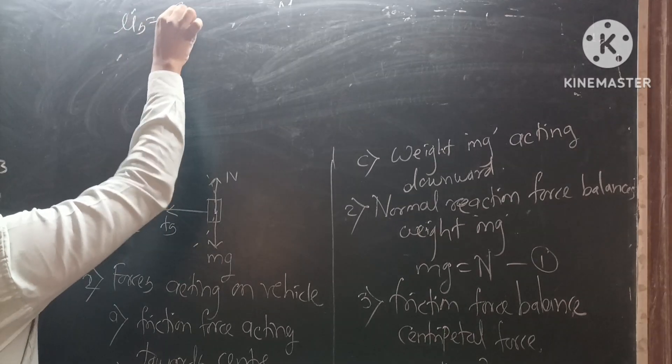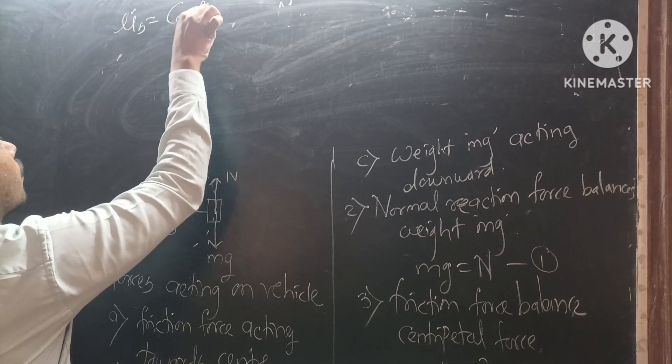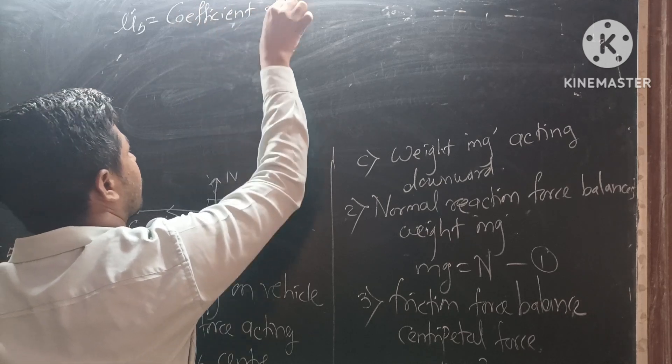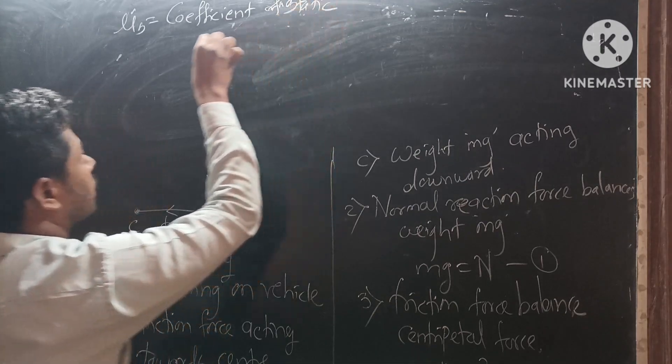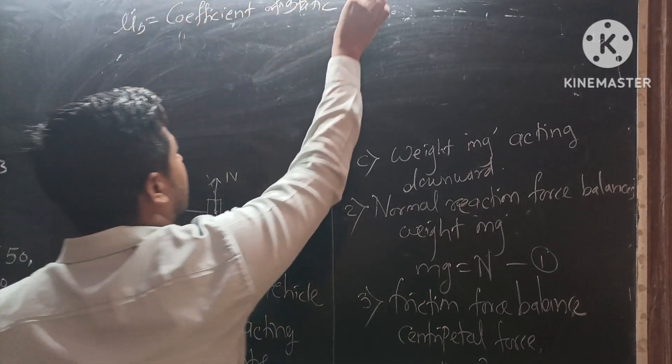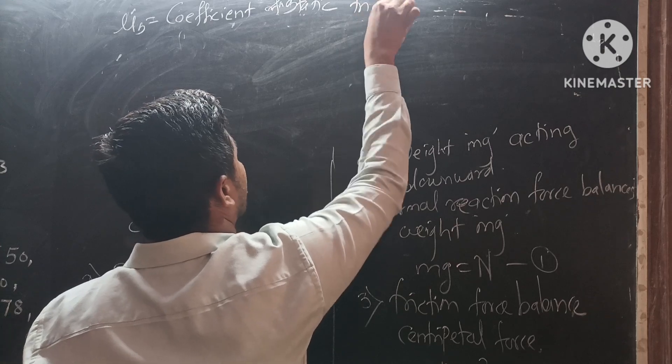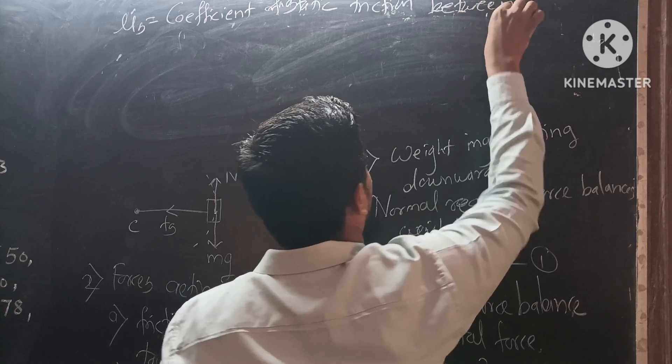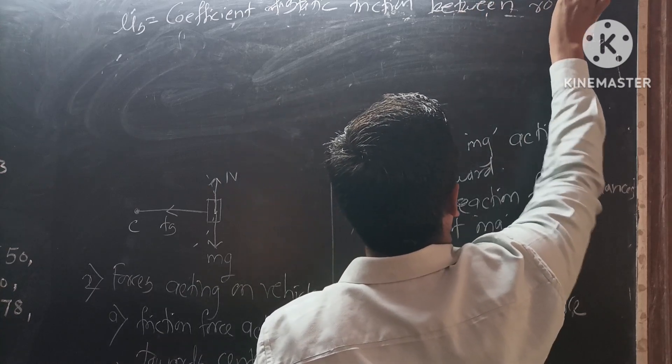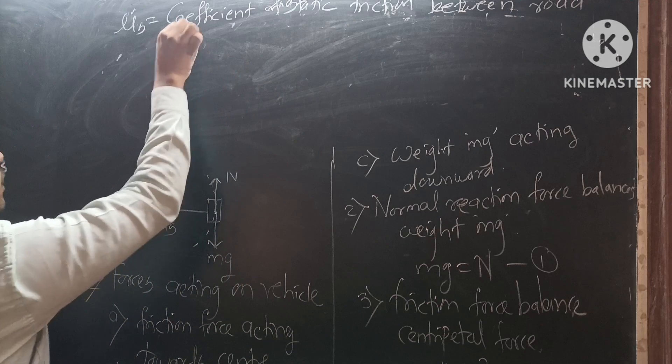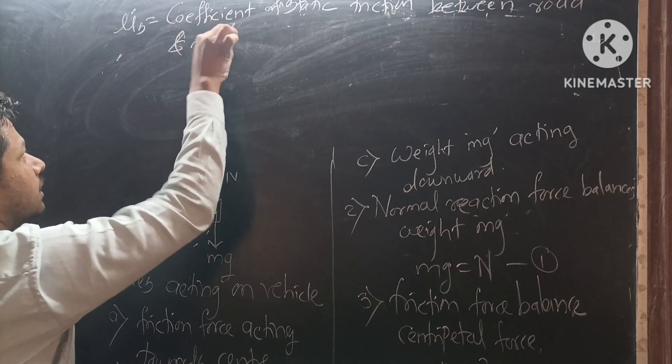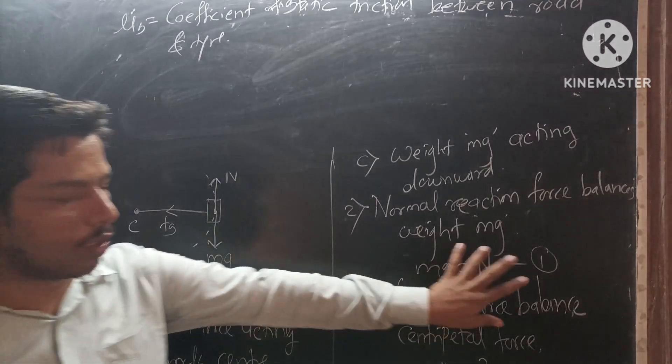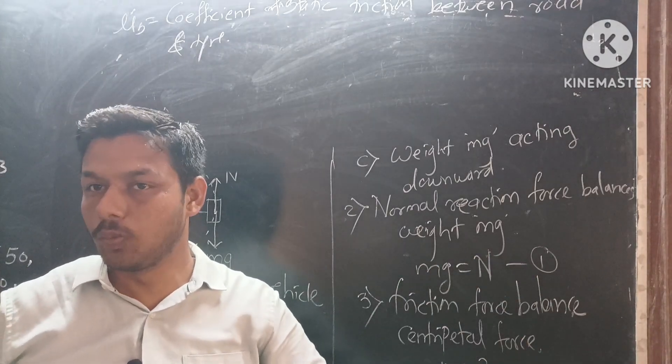μs is coefficient of static friction between road and tire. Coefficient of static friction between road and tire. Equation 1 and equation 2. Now we will divide equation 2 by equation 1.